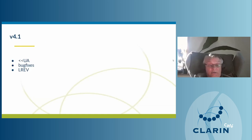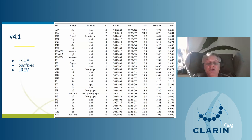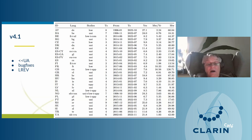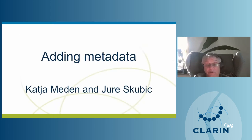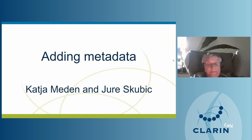We haven't quite finished with ParlaMint yet, even though the project is over. We're working on a journal publication and on a maintenance release, version 4.1. The main change in 4.1 is that the Ukrainian corpus has been significantly extended — it now runs from 2002 up to November 2023 — making it much larger than before. We'll also do bug fixes for issues found in 4.0.